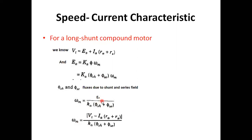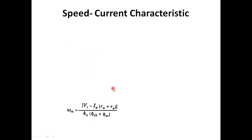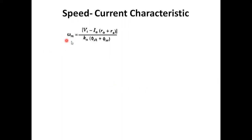Now, if we replace Ea — the armature voltage — with Ea = Vt − Ia(Ra + Rs), and substitute into the speed equation, we finally get: ωm = [Vt − Ia(Ra + Rs)] / [Ka × (Φ_SH + Φ_SE)]. This is the governing equation for speed-current characteristics, showing that ωm is related to armature current Ia.